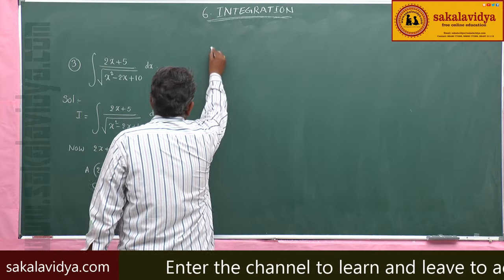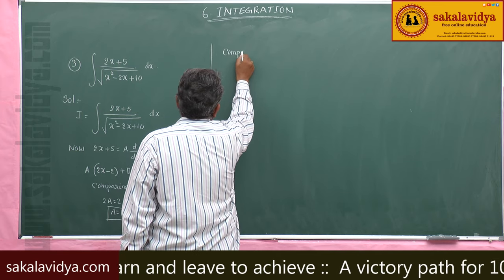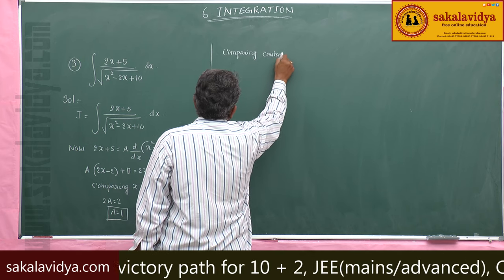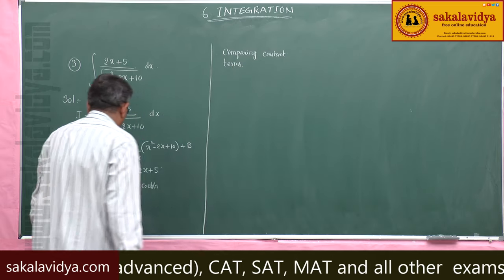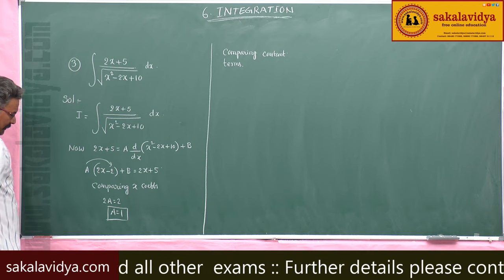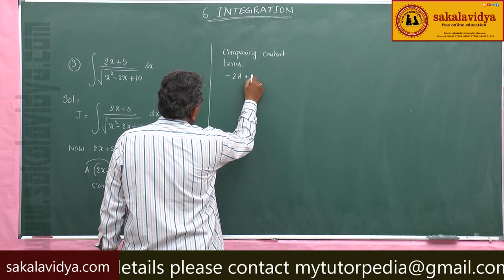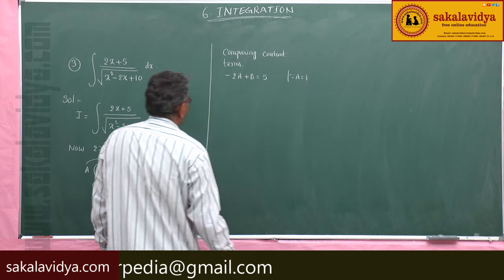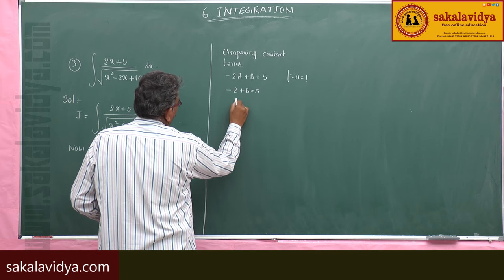Comparing constant terms: -2A + B = 9. Since A = 1, we get -2 + B = 9, therefore B = 11.